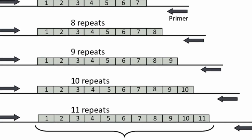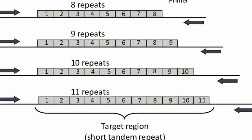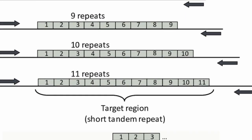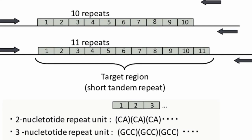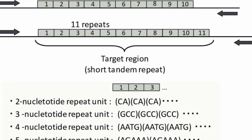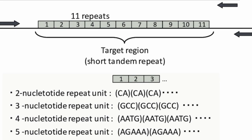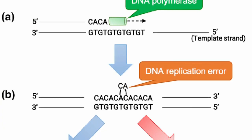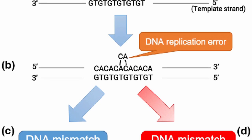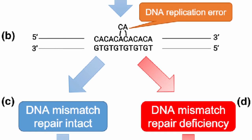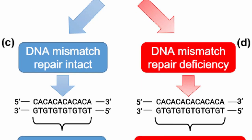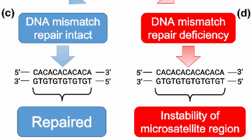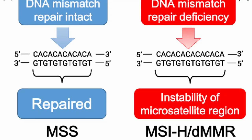Moving back to short tandem repeats, these can be found in non-coding regions of the genome, such as the promoters and untranslated regions (UTRs) of genes. Changes in the length of these repeats can affect gene expression and regulation. For example, variations in the length of microsatellites in promoter regions can influence the binding of transcription factors and, consequently, gene expression. In individuals with microsatellite instabilities (MSIs), errors in DNA replication or repair mechanisms cause these sequences to expand or contract, leading to variations in the number of repeats. The most common cause of MSI is a malfunction in the DNA mismatch repair system.